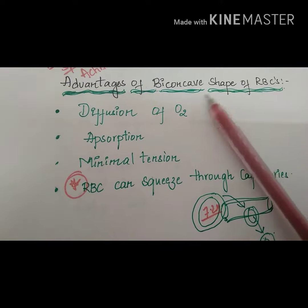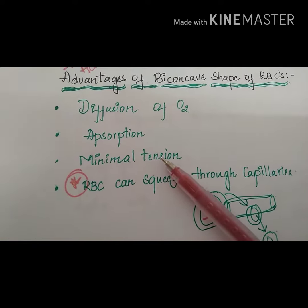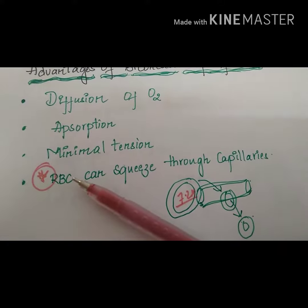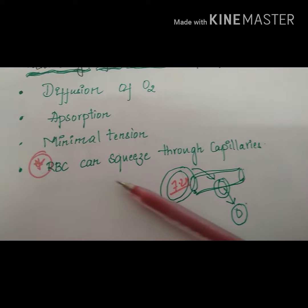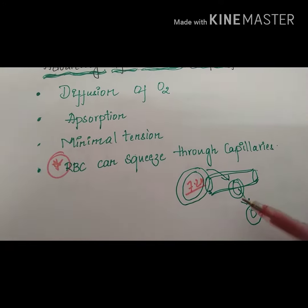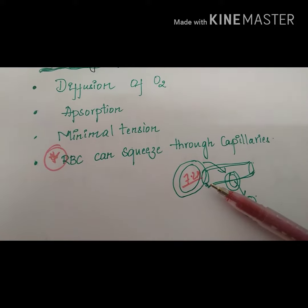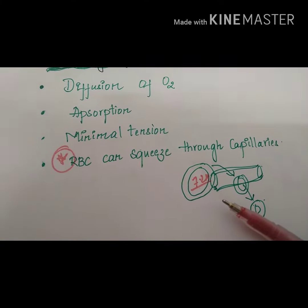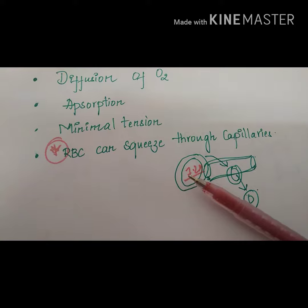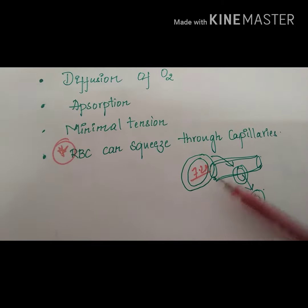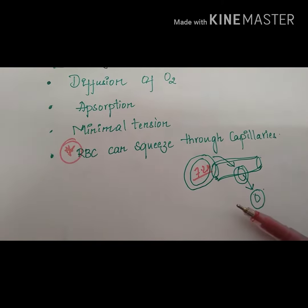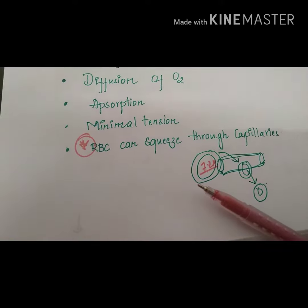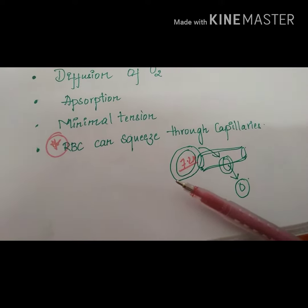Additionally, when the volume within the RBCs alters, the disc shape offers minimal tension. A very important function is that RBCs can squeeze through capillaries — capillaries can be as small as seven microns or even less. For the RBC to pass through such narrow capillaries, the disc shape is essential, as a round, rod, or larger shape would not enable this.